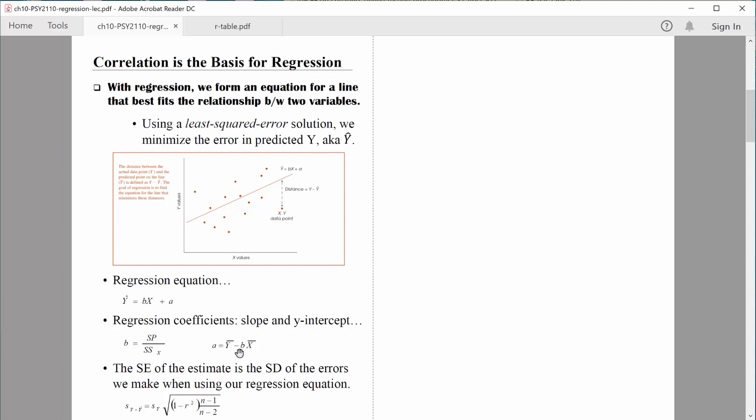Once we have that slope value, we can use that in the equation for computing the y-intercept. What we will also need is the mean of x and the mean of y. So you can see mathematically, once we've computed the correlational analysis, it's going to be pretty easy for us to compute these regression coefficients and then put them together to form a regression equation.